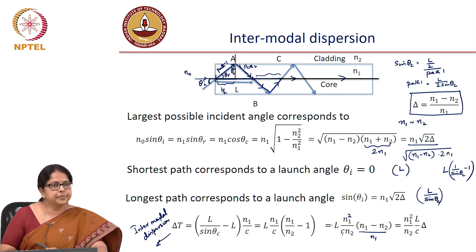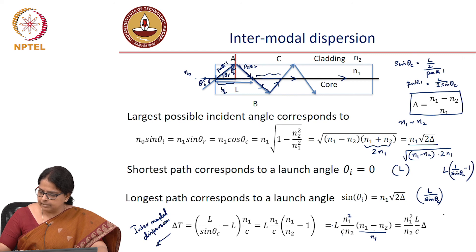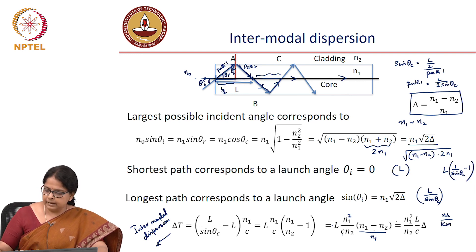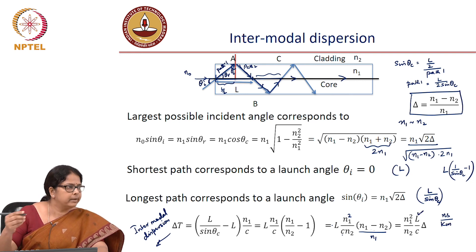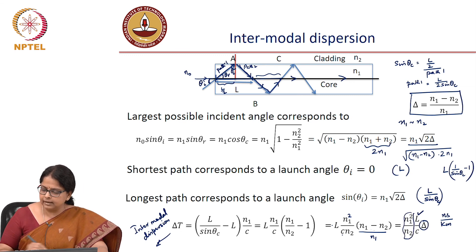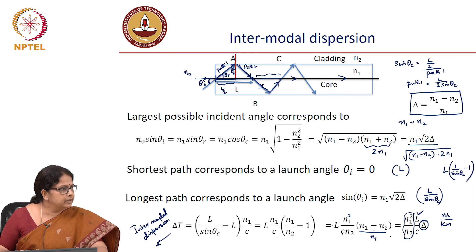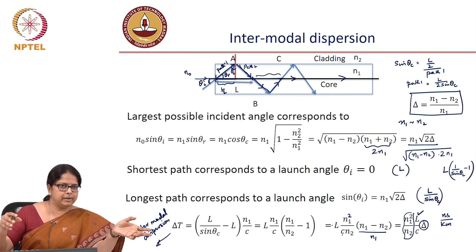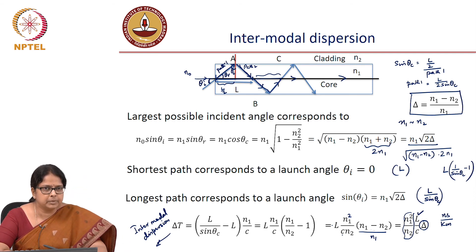What is the unit of intermodal dispersion? Seconds. Typically it is represented as nanoseconds or picoseconds per kilometer or per meter. You always normalize to 1 meter or 1 kilometer. So you say that a fiber has an intermodal dispersion of so many picoseconds per kilometer or nanoseconds per meter. That is how you represent intermodal dispersion.